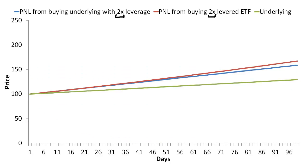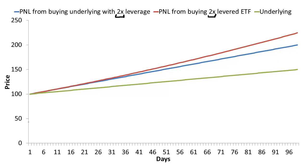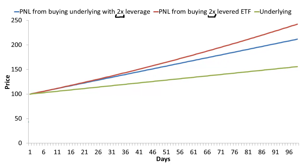As I switch to the path where the underlying moves up by a steady amount every day, you see a similar effect as I increase the volatility of the underlying. If I assume the underlying is now moving up by a larger number every single day, you'll notice that as that happens, the relative outperformance of the ETF increases.